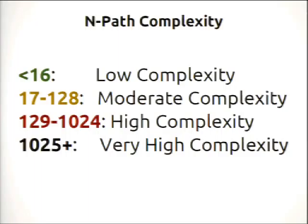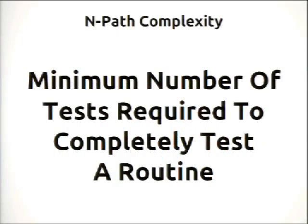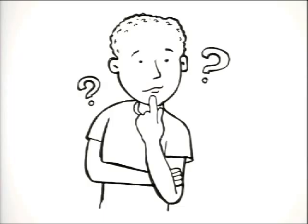With n-path complexity we have similar ranges, which you can find on the internet. What does n-path really mean? Translated, it's the minimum number of tests required to completely test a routine. So if you only have one test for a method with an n-path complexity of eight, you're missing seven test cases. Now we can use this metric to dive deep into some interesting code — let's apply it to Drupal 7.